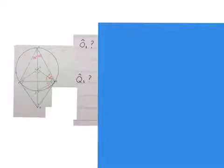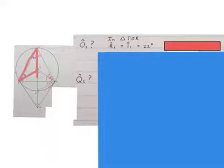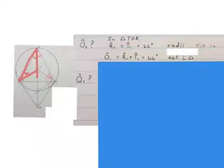I'm going to work out two more angles, angle O1 and then Q2 next. We start in triangle TOR. Angle R1 is equal to angle T1, the two blue dots, equal to 22 degrees because those two radii are equal. The angles opposite them will be equal, we just write radii. So angle O1 will be equal to angle R1 plus T1 which is 44 degrees because of the exterior angles of a triangle. There's my triangle and there O1 is sitting outside the triangle.